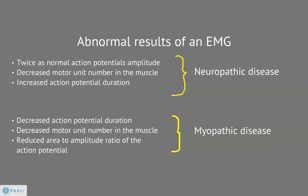Abnormal results of an EMG can be evaluated by the shape and size of the action potentials. For neuropathic diseases, action potentials have twice the normal amplitude, the action potential duration is also increased, and the motor unit number in the muscle is decreased. For myopathic diseases, the action potential duration is decreased, the area-to-amplitude ratio of the action potential is reduced, and the motor unit number is also decreased.